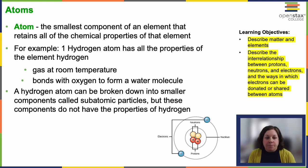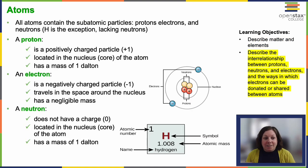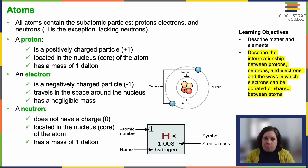All atoms contain subatomic particles: protons, electrons, and neutrons. The exception being hydrogen, which in its neutral state does not possess a neutron.